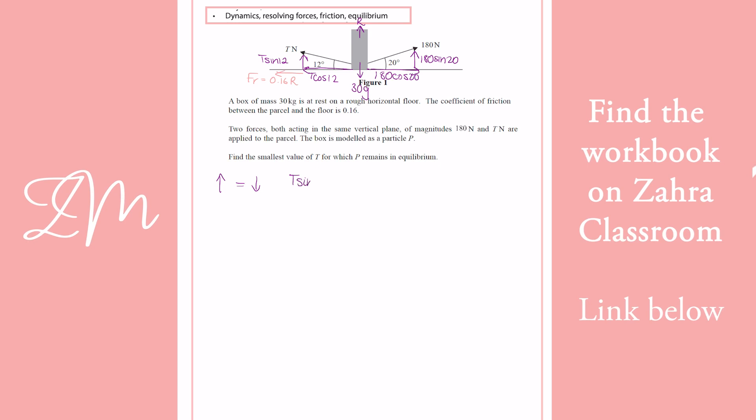So we've got T sine 12 going up. We've got R going up. We've got 180 sine 20 going up. 1, 2, 3 going up. And we've got 30G going down. And what you might want to do is, once you've dealt with something, almost sort of tick them off, so you know you're not going to miss any of your forces you need to be thinking about.